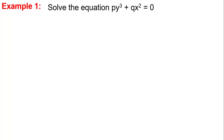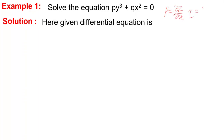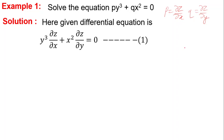Let us see the first example. Solve the equation py³ + qx² = 0. You know that p = del z/del x and q = del z/del y. So the given differential equation becomes y³·(del z/del x) + x²·(del z/del y) = 0. This is equation number one.